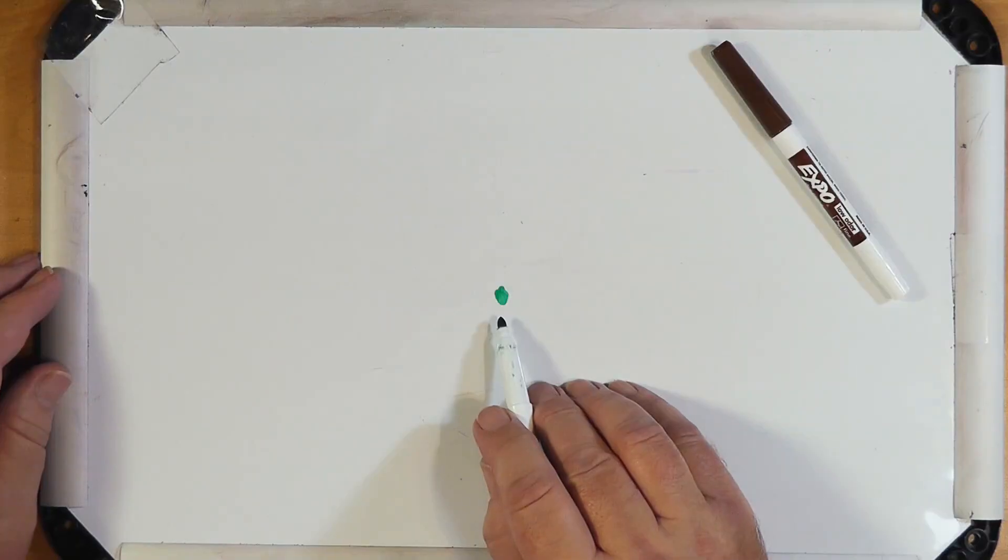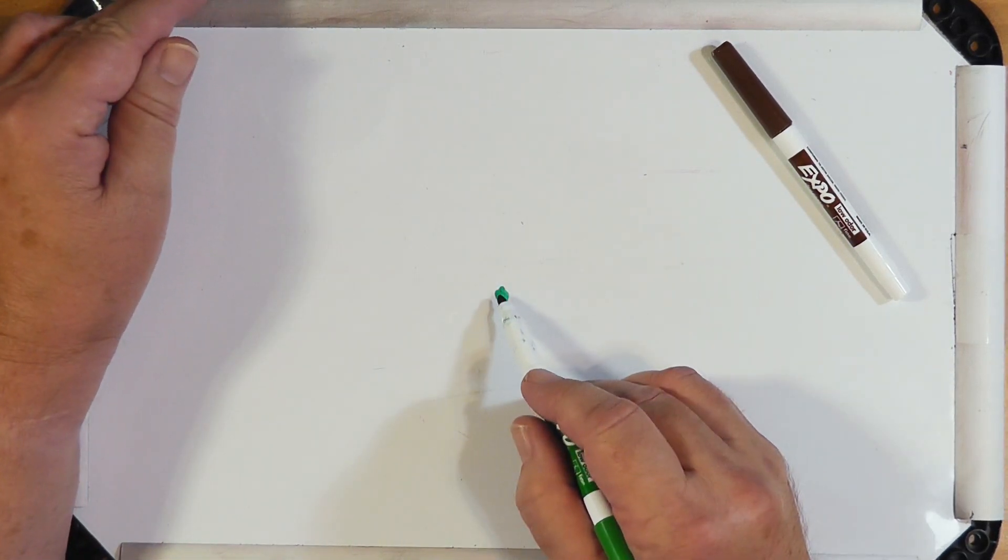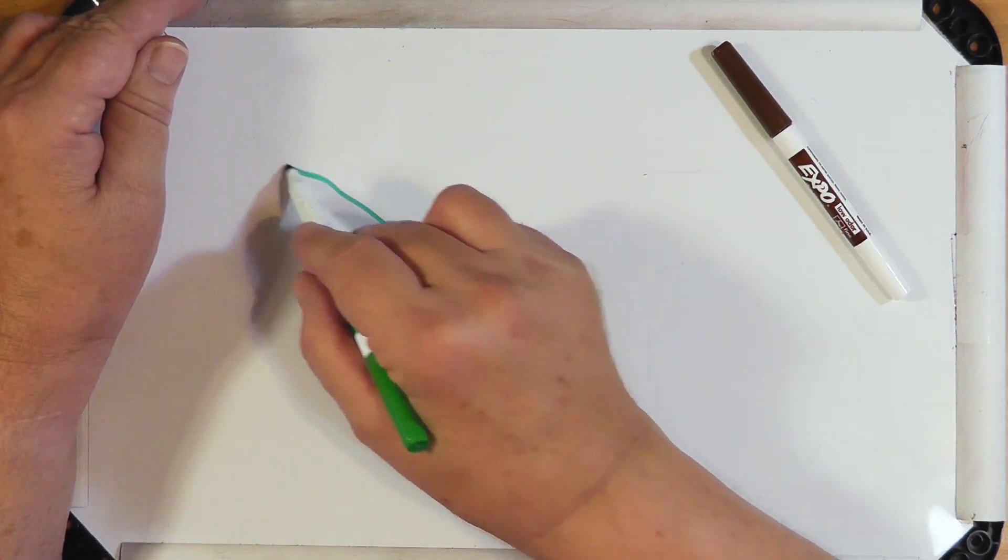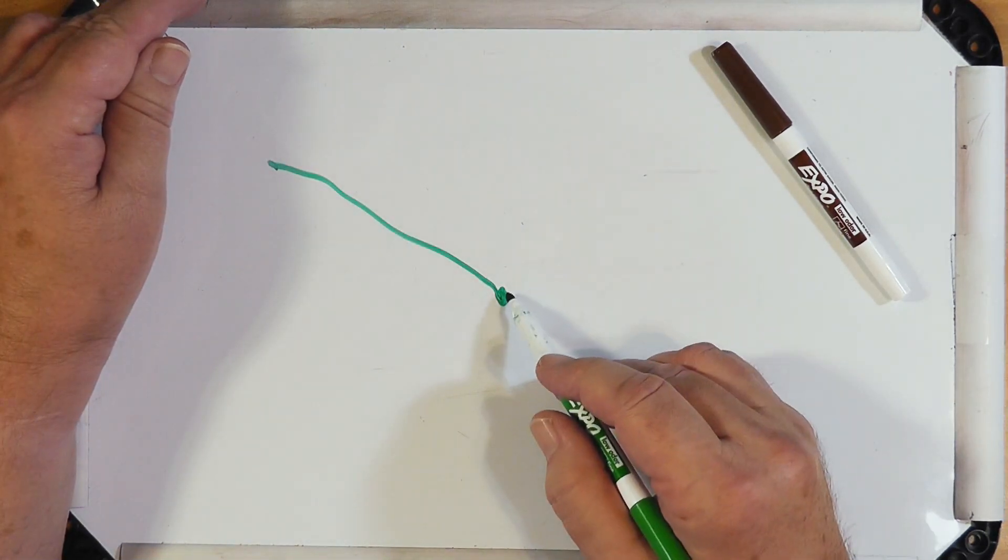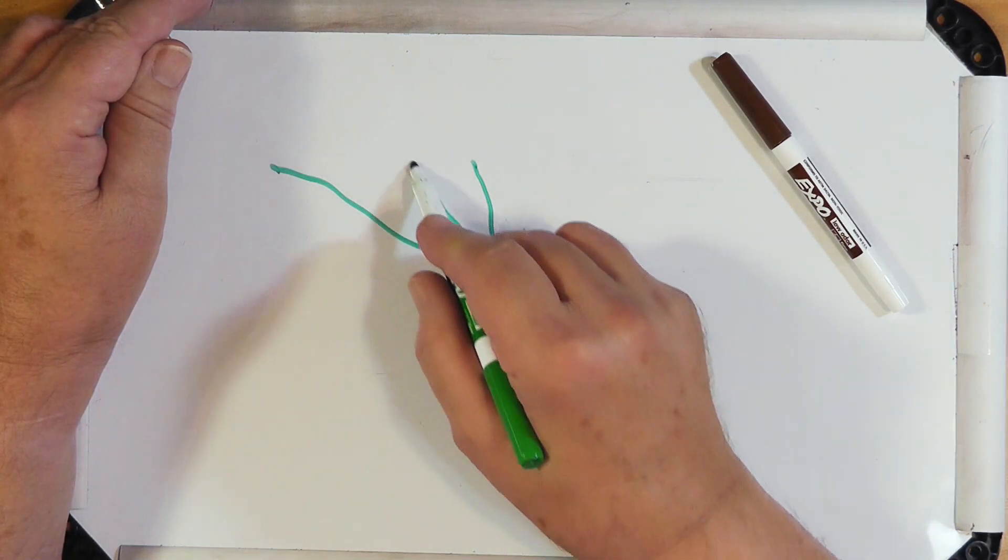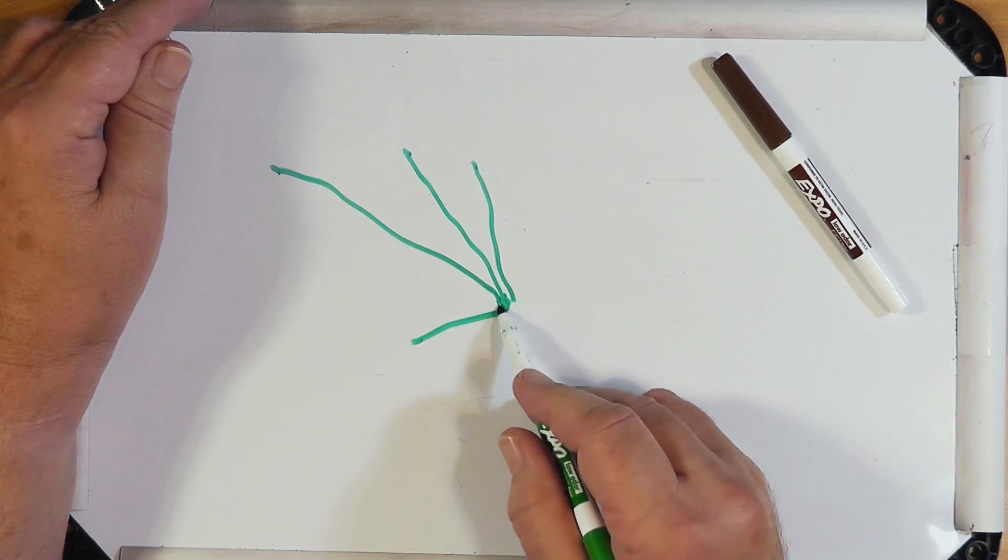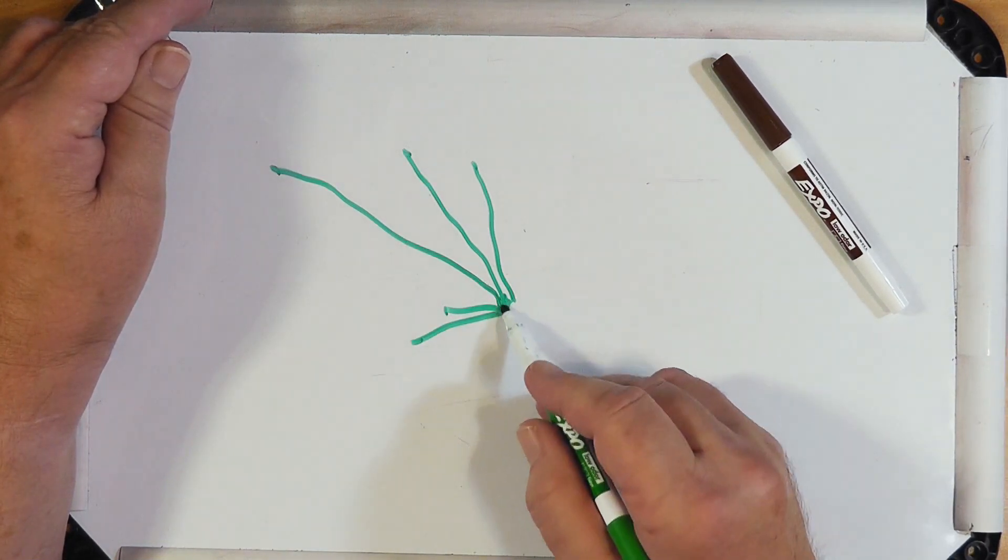KI5LBY. He wants to do a fan dipole like this. This is looking down at the top. Okay. And he's got a pole, and that's the top of the pole. And he wants to run a fan dipole from here. One element for 80. Here's an element for 40. Element for 30 if you want it. And so on. He's got the different elements right there.